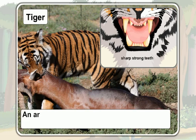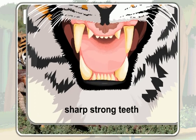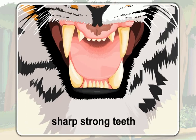An animal that a tiger hunts and kills is called a prey. After killing its prey, a tiger again uses its sharp, strong teeth to bite and tear their flesh and eat them.